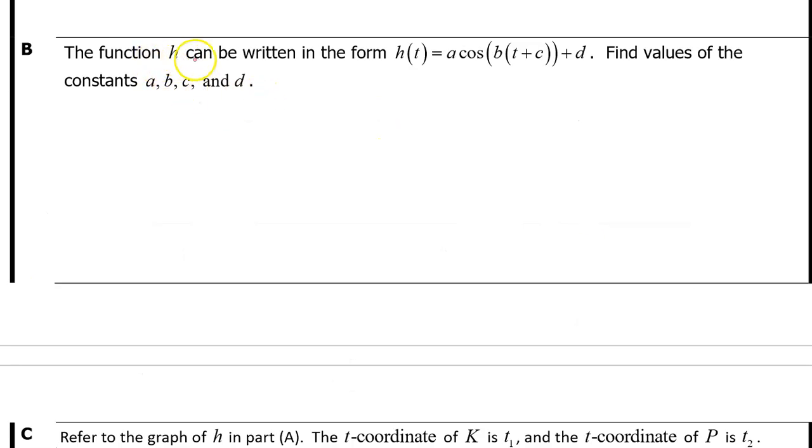Part B. The function h can be written in the form h(t) = A cos(B(t + C)) + D. Find the values of constants A, B, C, and D.